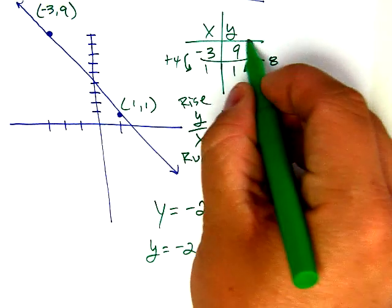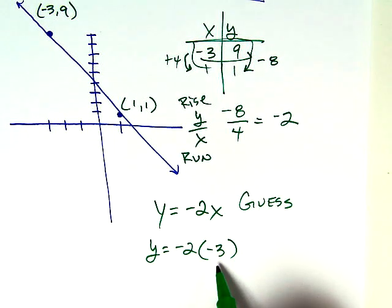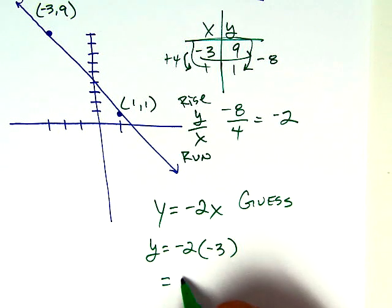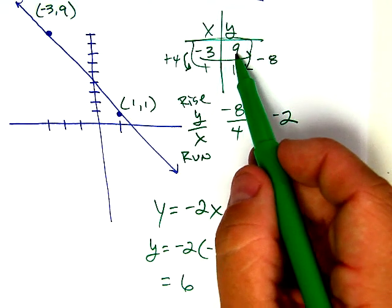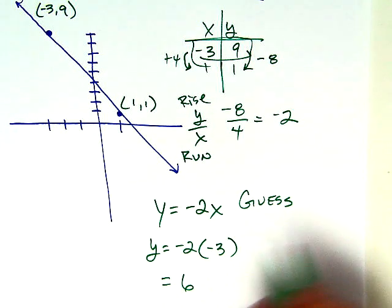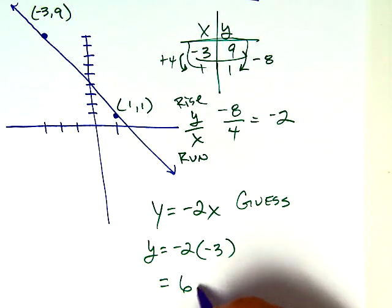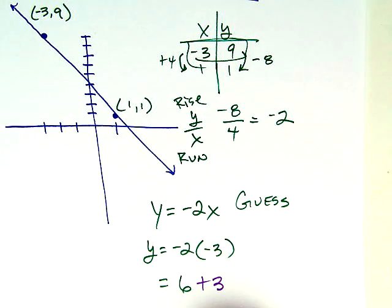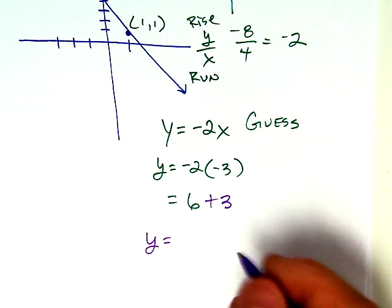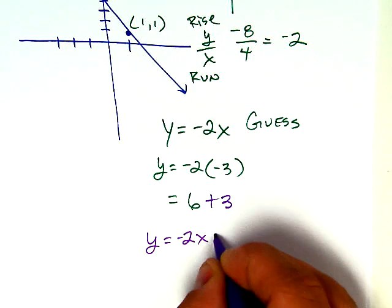So as you guys see, I'm going to test this point by plugging in the negative 3. Negative 2 times negative 3 is 6, but I want it to be a 9. So how can I force 6 to become a 9? I just simply come in here, and I force it by adding a 3. So my next conjecture, or my next guess, is Y equals negative 2X plus 3.